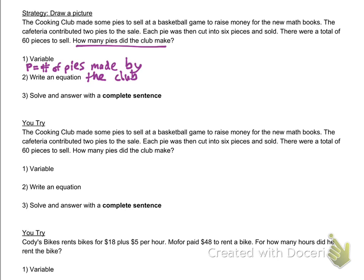Let's read it real quick. The cooking club made some pies to sell at a basketball game to raise money for the new math books. The cafeteria contributed two pies to the sale. Each pie was then cut into six pieces and sold. So the cooking club's pies and the cafeteria's pies were cut into six pieces, and there are a total of 60 pieces.